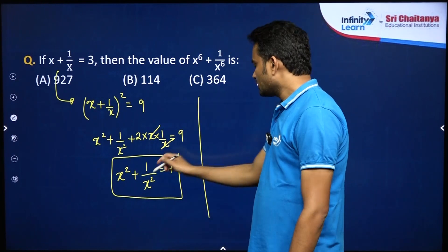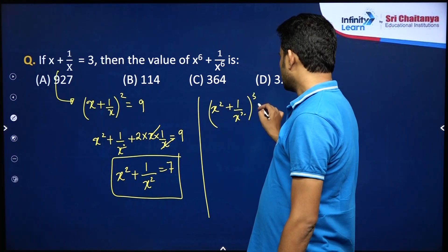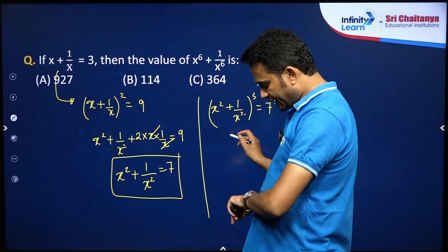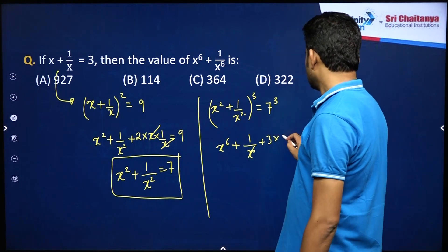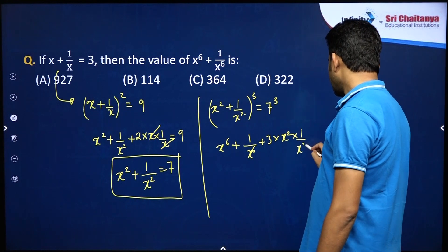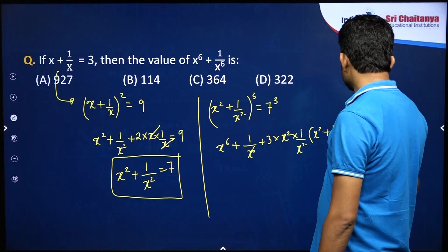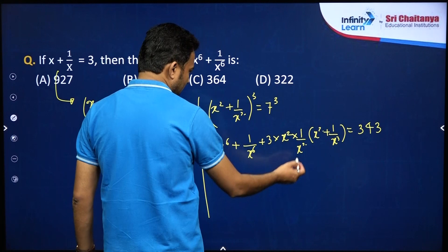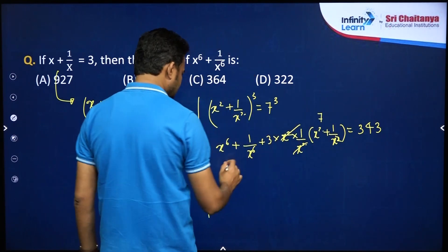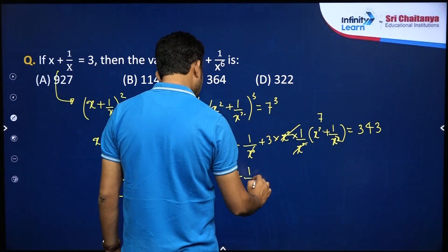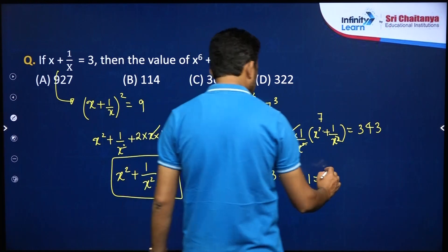Now cube both sides. So x square plus 1 by x square whole cube is 7 cube. From here you get x power 6 plus using A cube plus B cube plus 3AB times A plus B. And 7 cube is 343. The x square terms cancel out. x square plus 1 by x square is 7, so 3 times 7 is 21. Therefore x power 6 plus 1 by x power 6 equals 343 minus 21, that is 322.